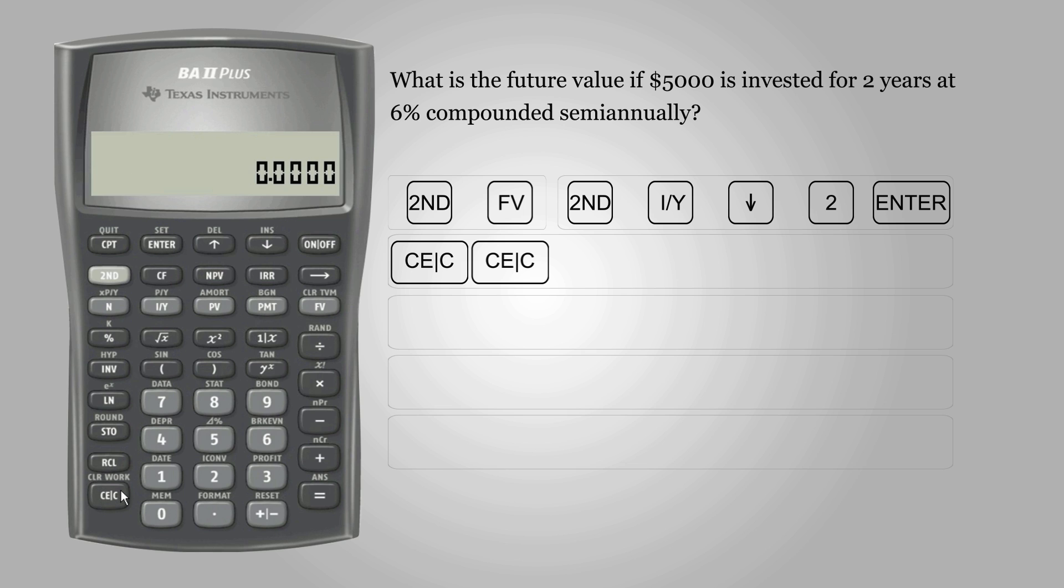Number of years is 2, so enter 2 and press N for number of periods. The calculator automatically multiplies the number of years to the CY value entered in the previous step.